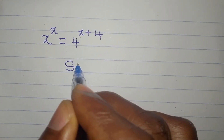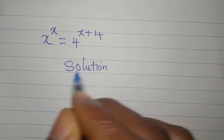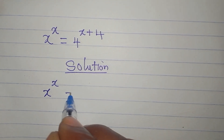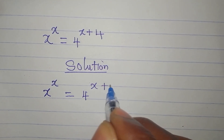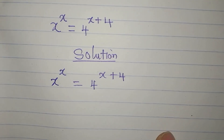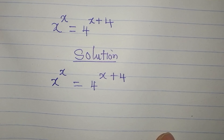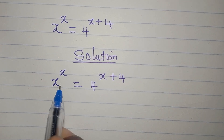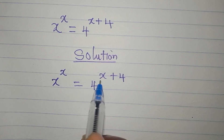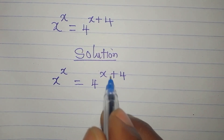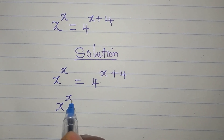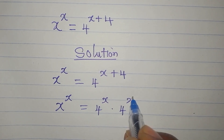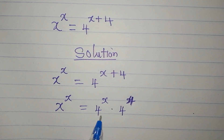Let's solve the equation x to the power of x equals 4 to the power of x plus 4, and find the value of x. The first thing we're going to do is bring the terms with x to one side, and simplify so that we'll have 4 to the power of x multiplied by 4 to the power of 4.